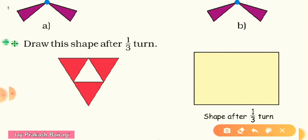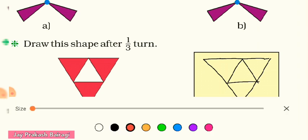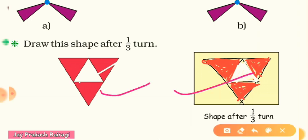In one third right turn, how will it look? Let me take the black color and draw. Taking a right turn for this triangular shape — I make the upper shape first, then the bottom, and a small triangle inside. Now I color the outer part red and the inner small triangle white. This is the one third turn of this picture.